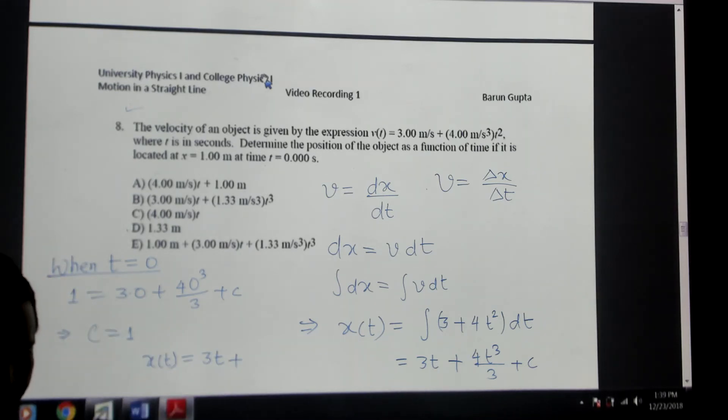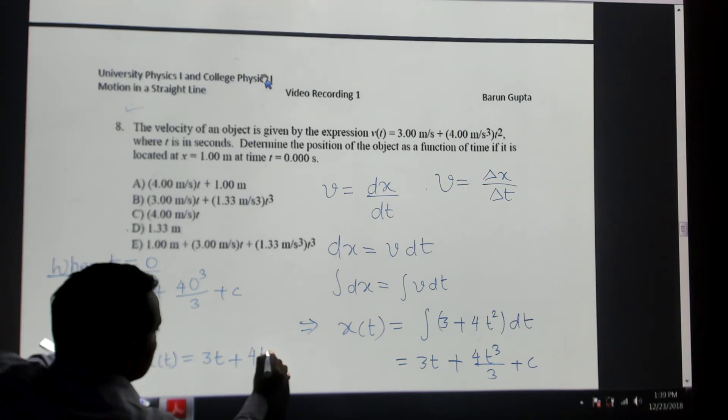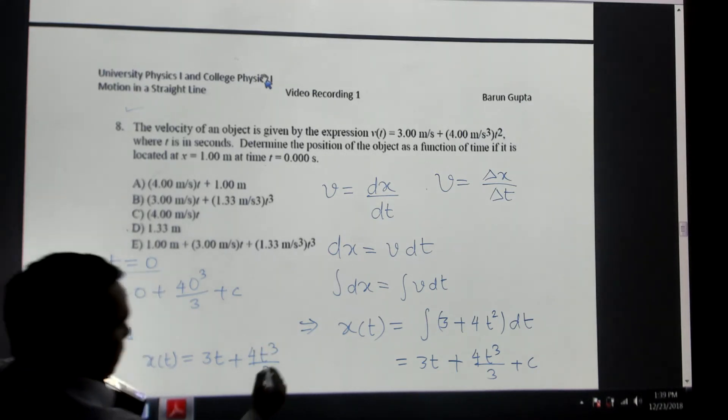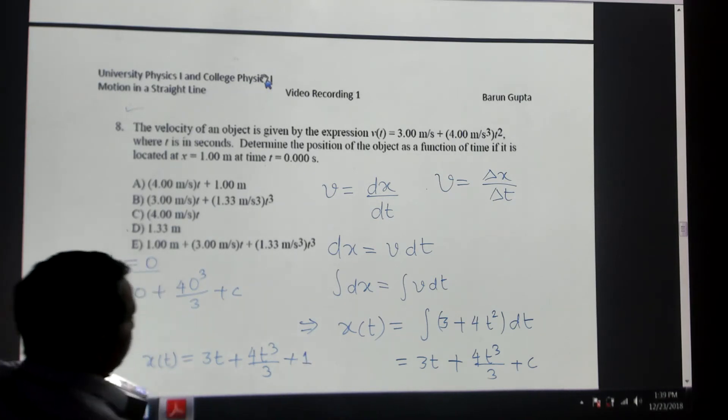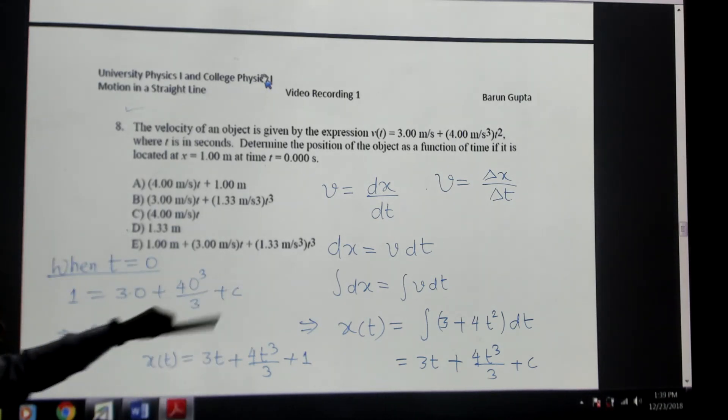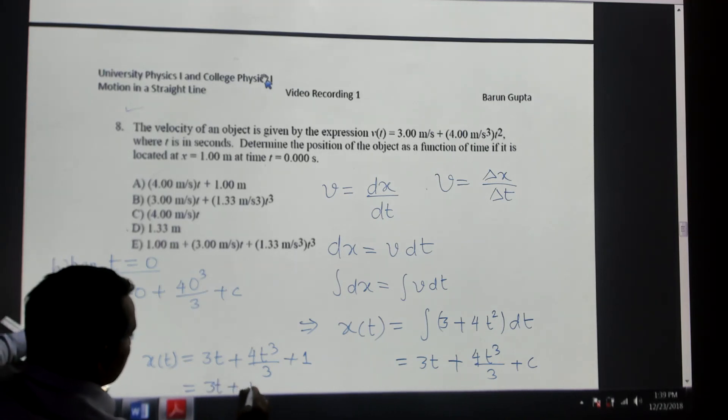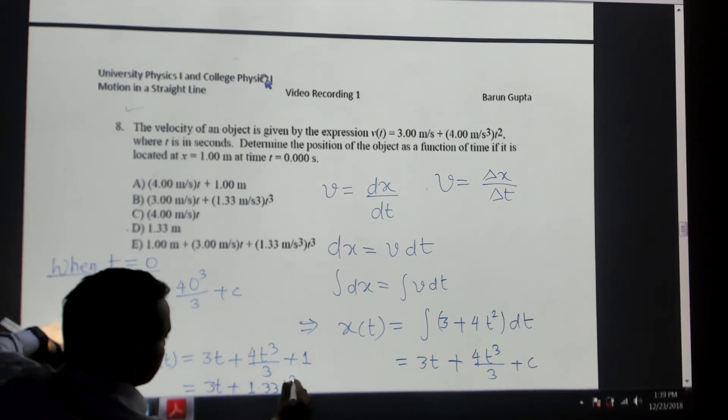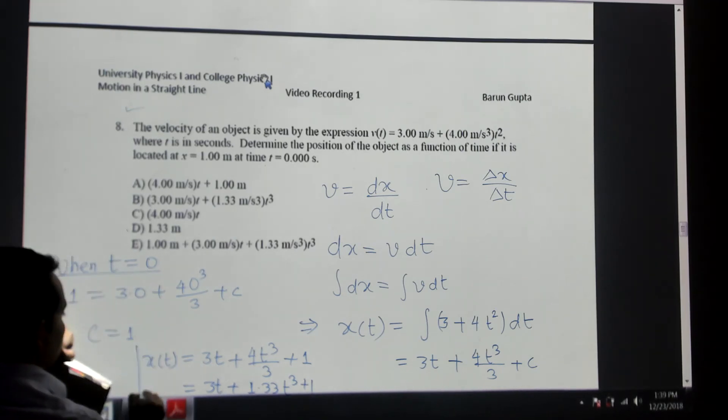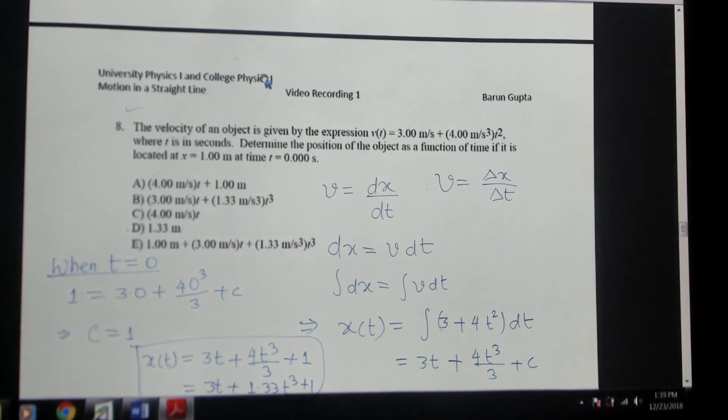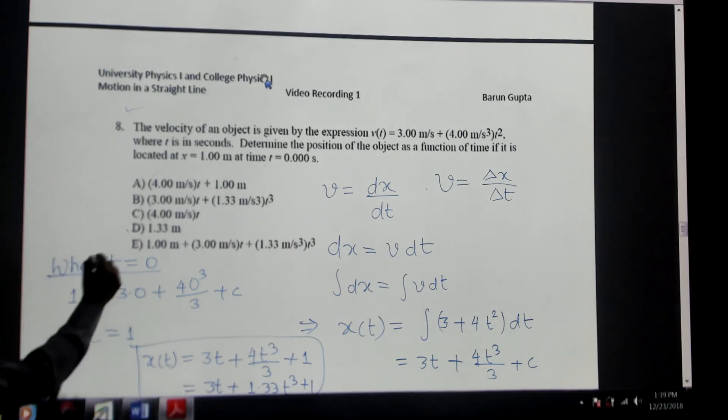plus 4t cubed over 3, and the C is 1. So 3t plus 1.33t cubed plus 1. This is your position as a function of time.